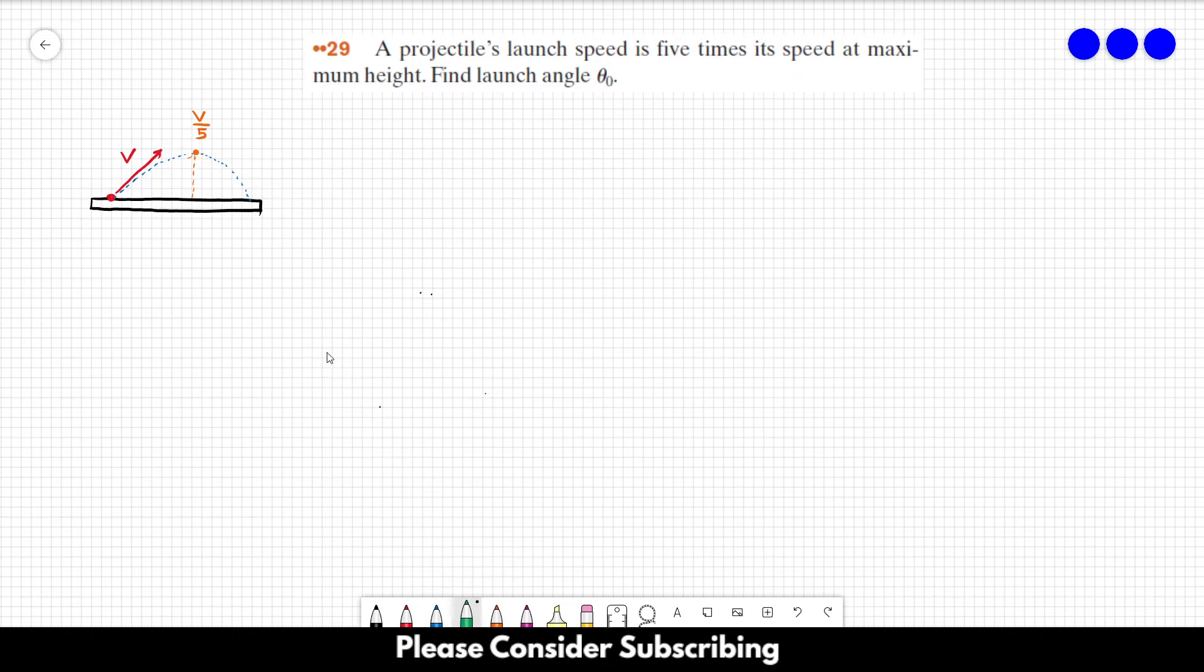So this is a pretty simple problem. The only thing that we have to notice is that at this point, exactly at this point, the speed at the Y direction, so let's say that this is X and this is Y, the speed in the Y direction is equal to 0 because it's moving upwards and then starts moving downwards. So exactly at this point, VY is equal to 0.